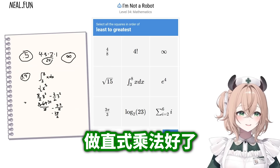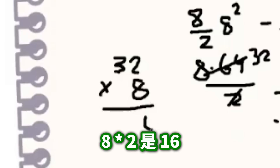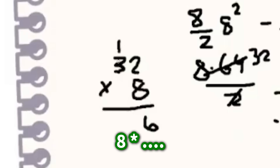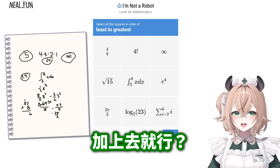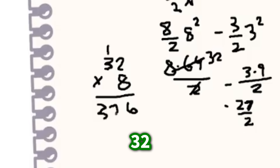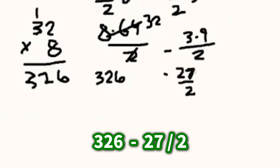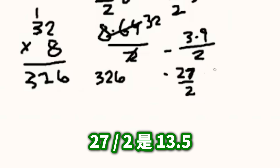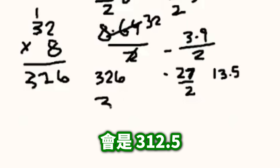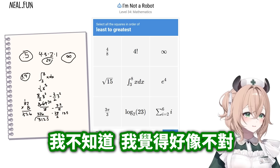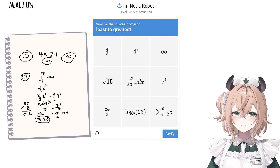Let's do long multiplication. 8 times 32 — 8 times 2 is 16... wait, do I remember how to do long multiplication? 4 times 8 is 32... 326 minus 27 over 2, which is like 13.5. 326 minus 13.5, that's like 312.5. Final answer. I don't know, I feel like that's not right.